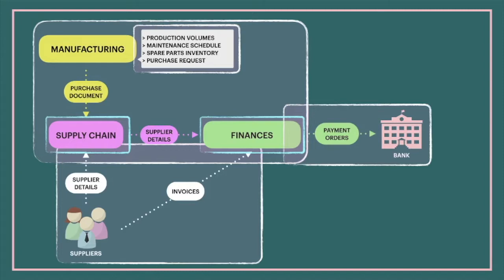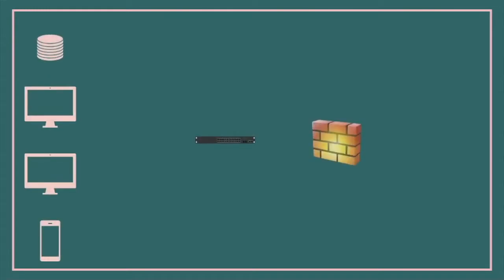To better understand how the two types of DLP work within the data infrastructure, let's look at a very simple organizational network diagram. Let's say we have a couple of computer users, a mobile user, maybe a database server, a switch firewall, a wi-fi router, and let's indicate the internet.